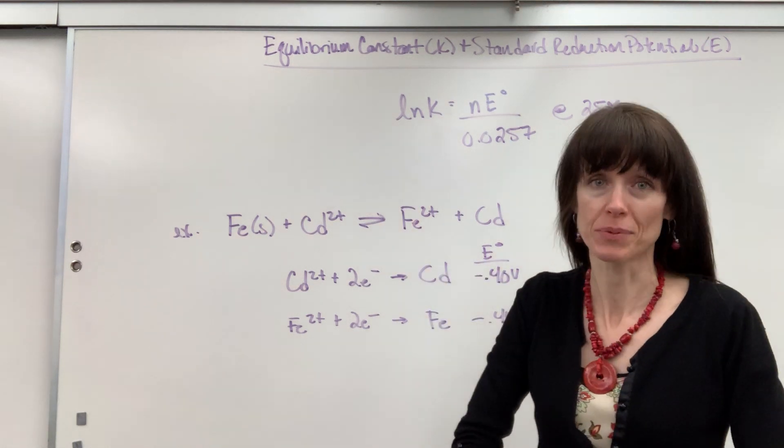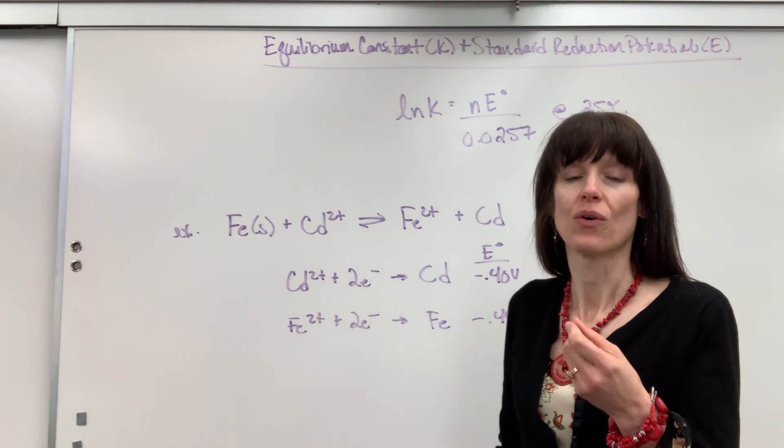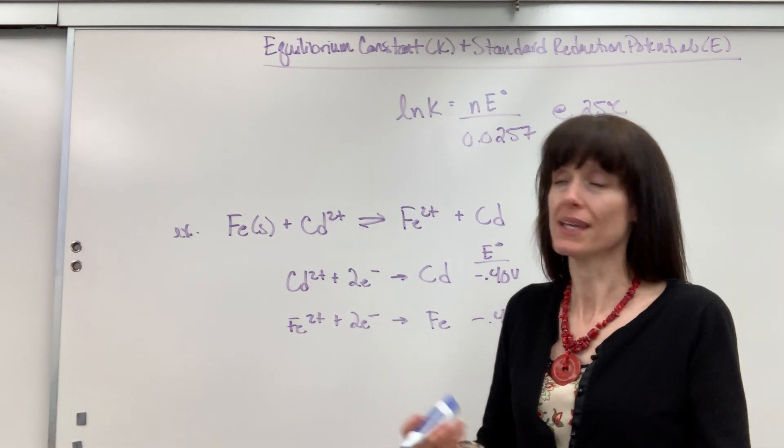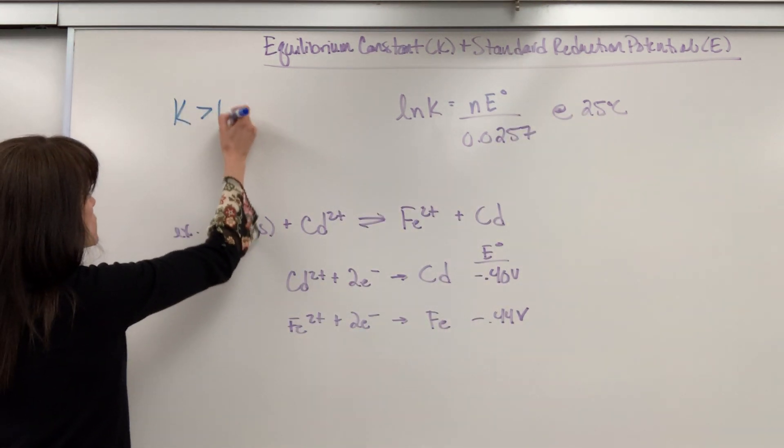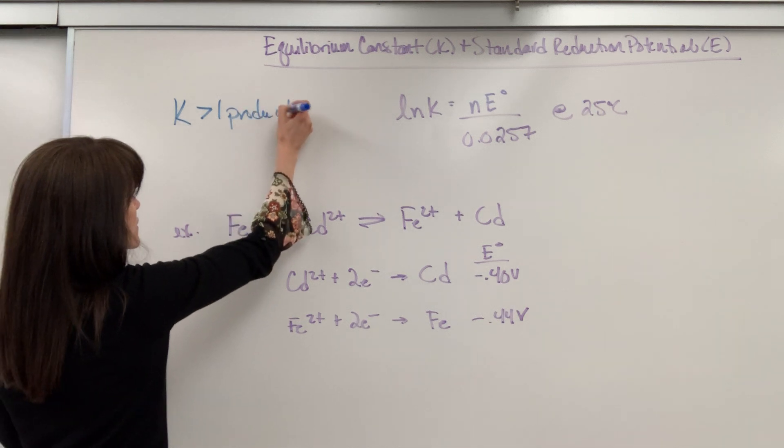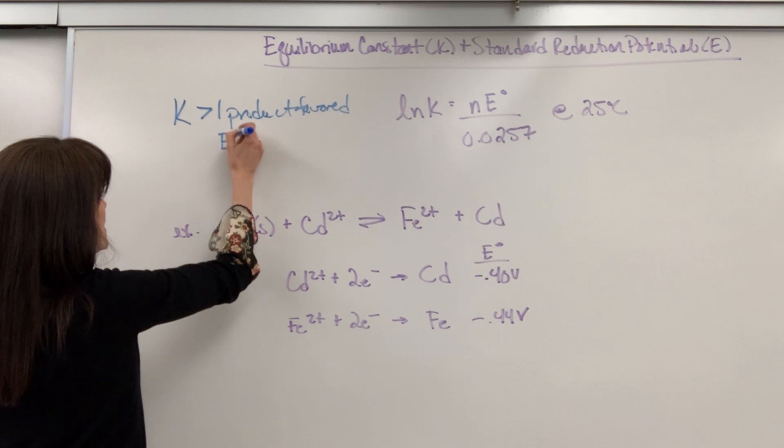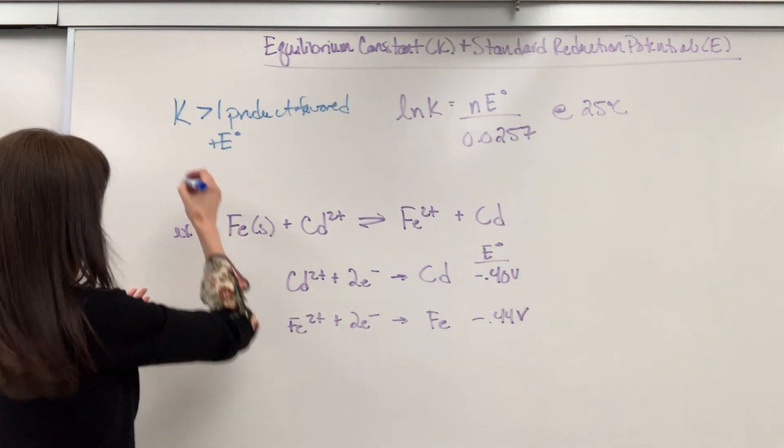You've seen this a couple of times in the videos, the relationship where we can look at signs or values and predict K or E. Just a reminder that if the equilibrium constant is greater than 1, that's product favored, and that means E is going to be a positive value, both spontaneous.